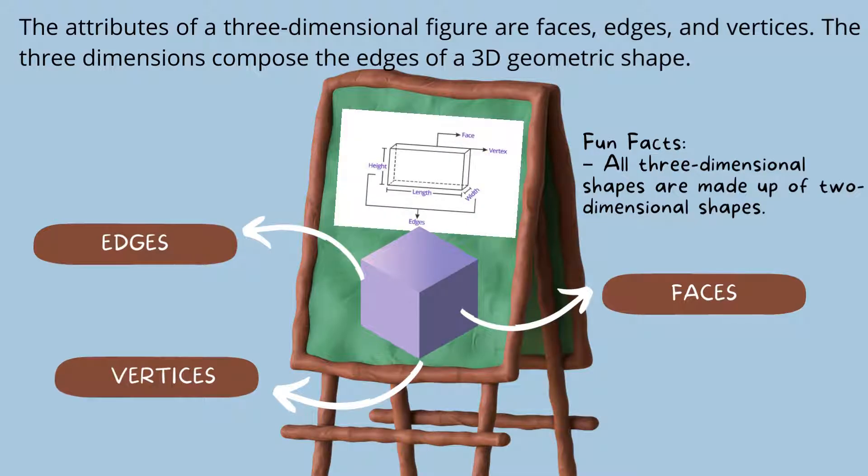The attributes of three-dimensional figures are faces, edges, and vertices. The three dimensions compose the edges of a 3D geometric shape, as you can see on the figure. Fun fact: all three-dimensional shapes are made up of two-dimensional shapes.